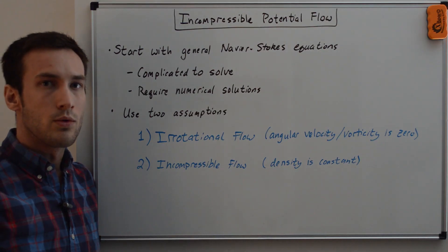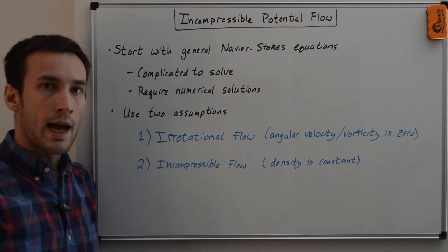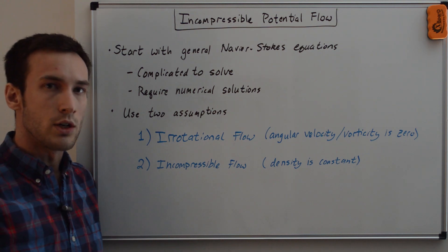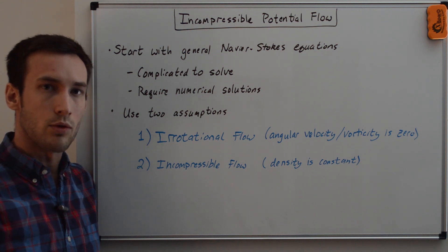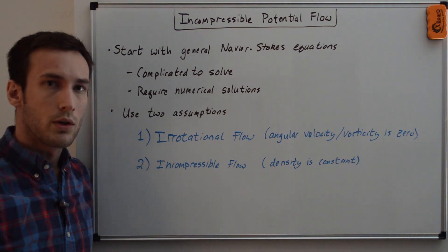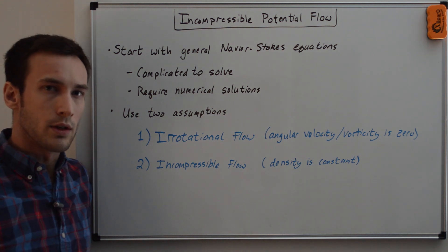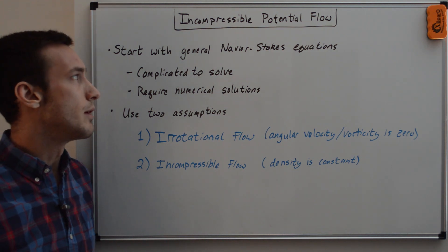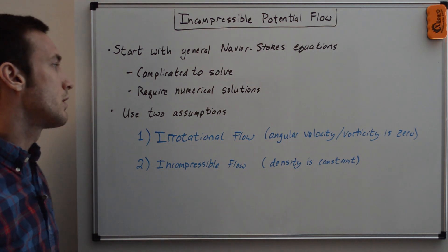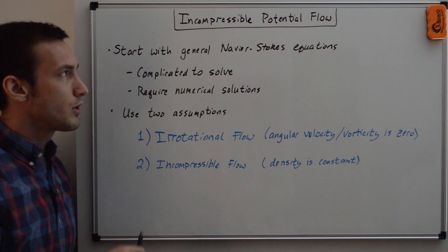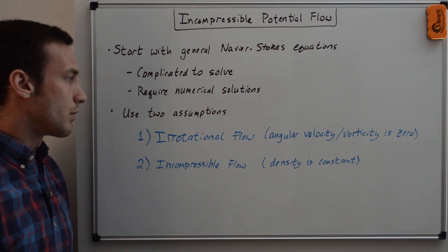In this video we're going to be going through the incompressible potential flow equation. By adding solutions of this flow equation together, we can solve for the flow around an airfoil, as I'll be going through in my panel methods videos. We're going to start with the general Navier-Stokes equations, which already have a couple of assumptions inherent in them. These are complicated to solve and require numerical solutions, so we're going to use two assumptions to boil this down into a more easily solvable form.